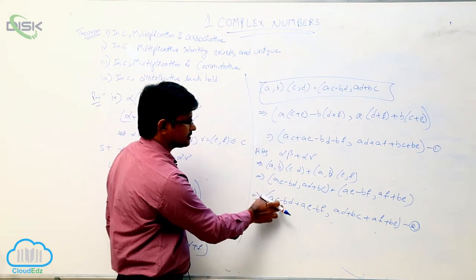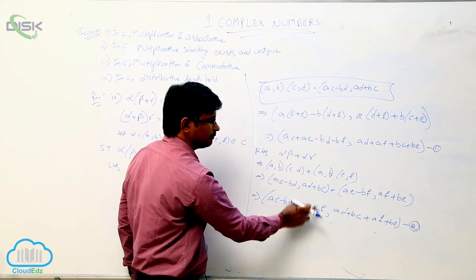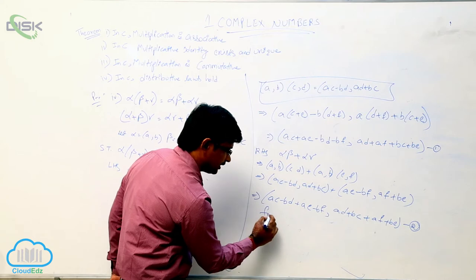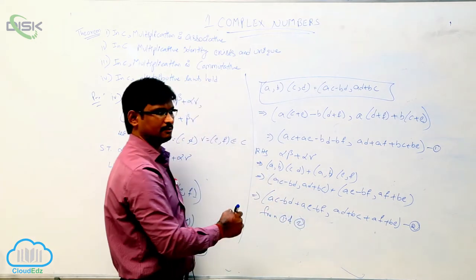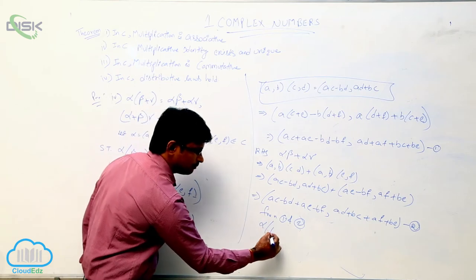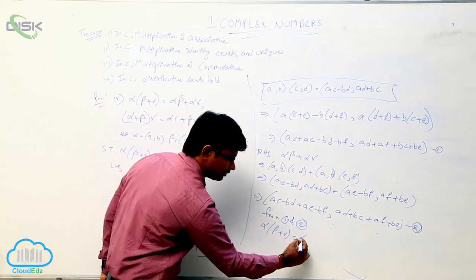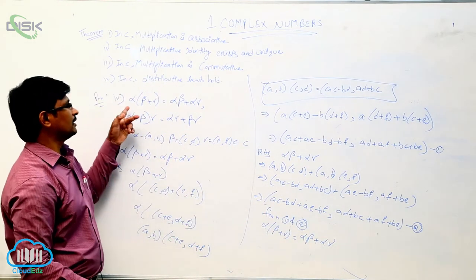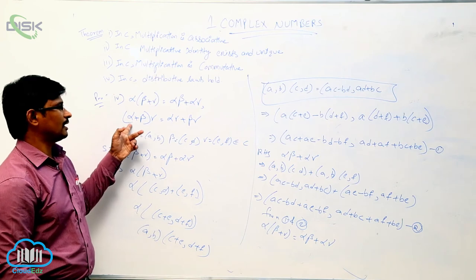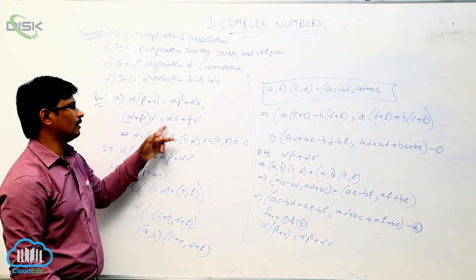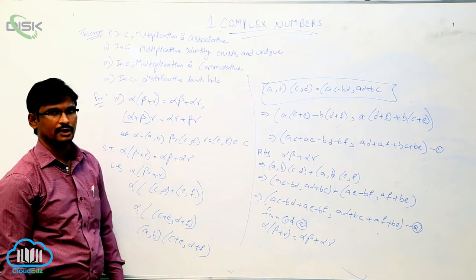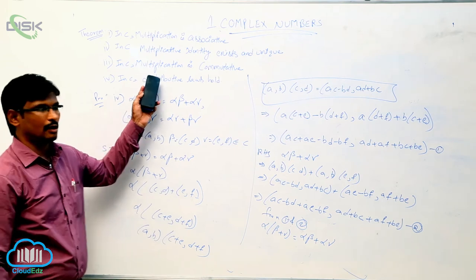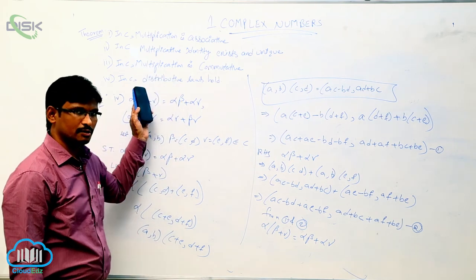Now observe these two equations. Both are the same: ac − bd + ae − bf and ad + bc + af + be match on both sides. So from equation 1 and equation 2 we can say that alpha·(beta + gamma) = alpha·beta + alpha·gamma. This is one of the distributive properties. Similarly we can prove (alpha + beta)·gamma = alpha·gamma + beta·gamma. From these four conditions we can say that in complex numbers, multiplication properties are also satisfied.